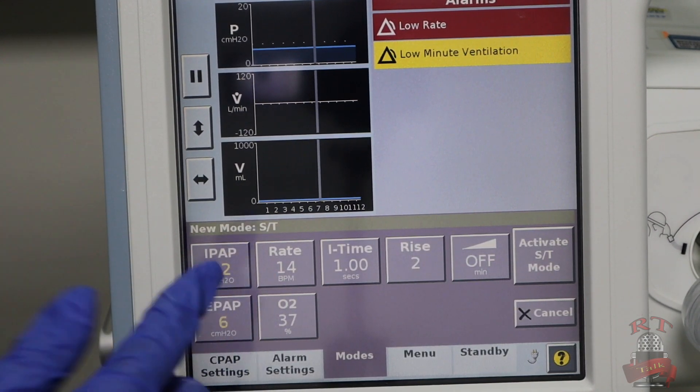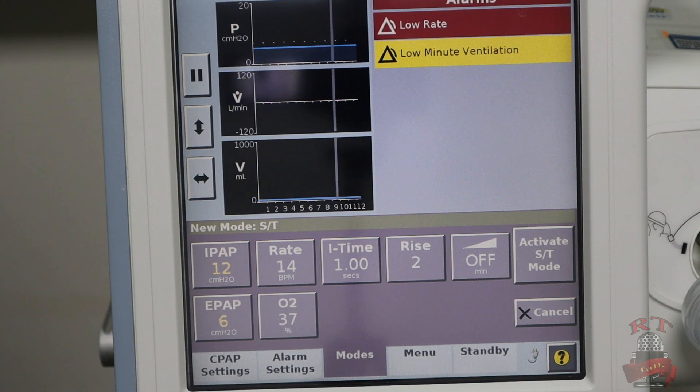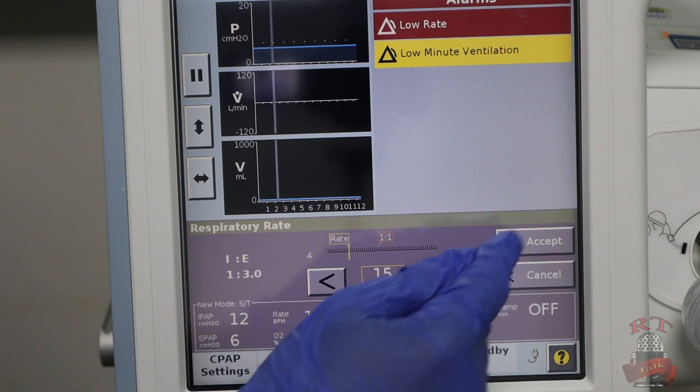Then you will go to the rate. It depends on the age range you are dealing with. If you are dealing with an adult, you will start with 12 up to 20, and it's working as a backup rate. If you are in pediatrics, you will keep it in the range of 16 to 25. It depends on the category of patient you are dealing with. For me, I will keep it at 15.